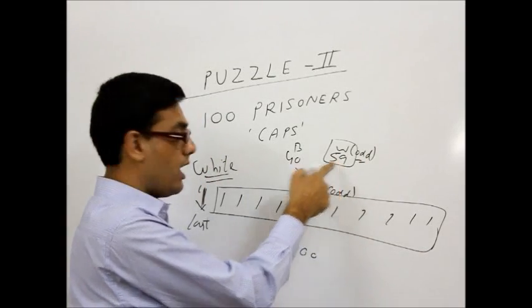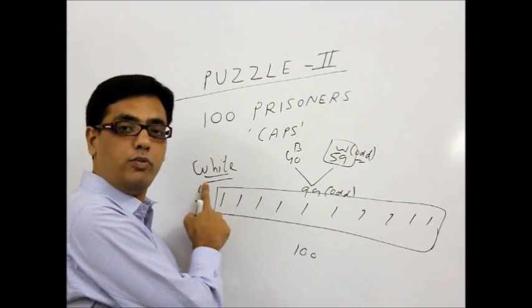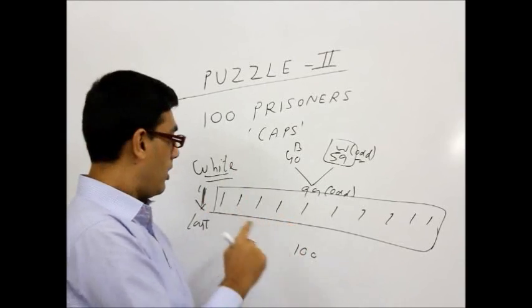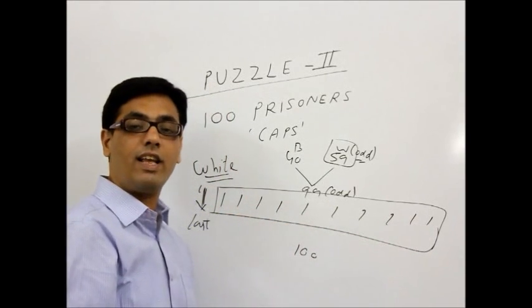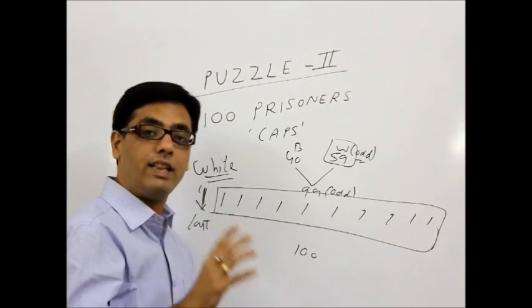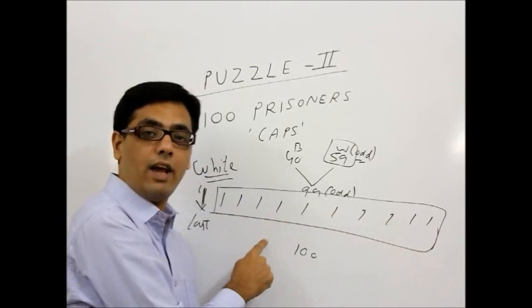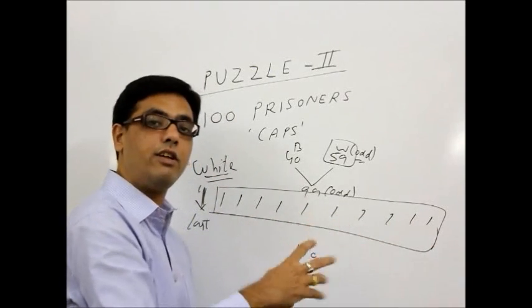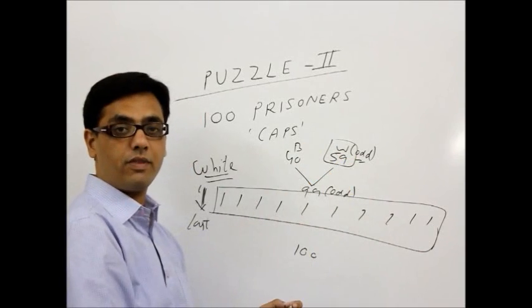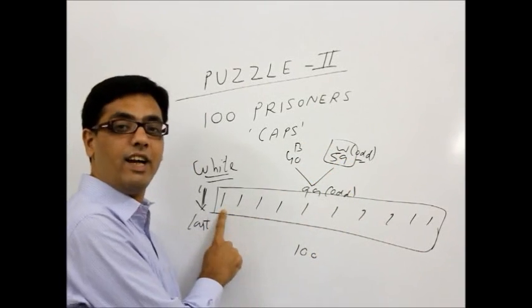59 odd number. The moment this person, the last person shouts white, all these 99 people will get the hint that the number of white cap in all of them as a total are odd. So what will the second guy do?